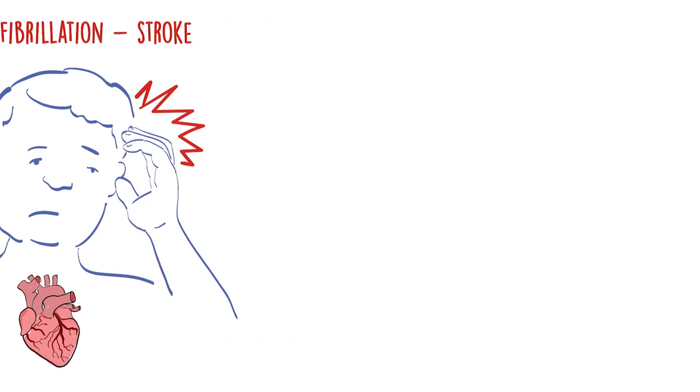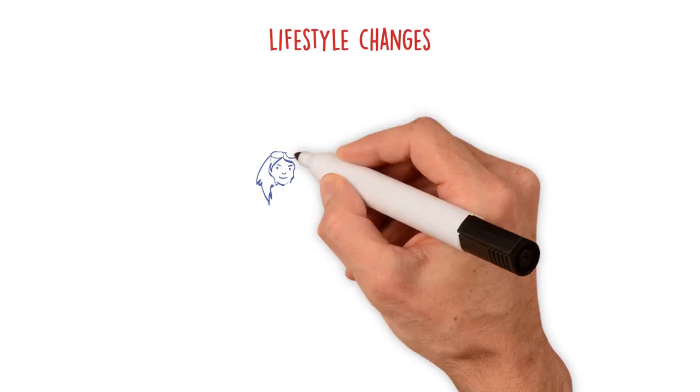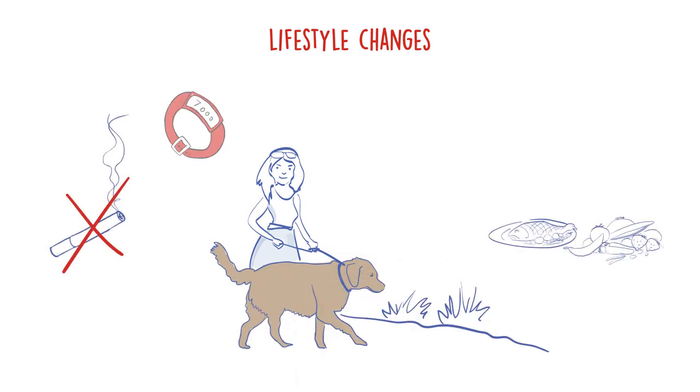Stroke is one of the leading causes of death and disability worldwide, but the good news is that most strokes, including those caused by AF, can be prevented.